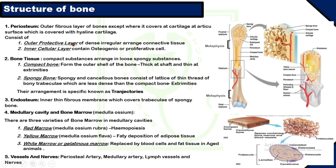The first structure of bone is the periosteum. It is the outer fibrous layer of bone which surrounds all of the bone except at the articular surface, which is covered by hyaline cartilage — so it does not cover the part of the bone facing the joint. Periosteum consists of an outer protective layer and an inner cellular layer. The outer protective layer is composed of irregular connective tissue, and the inner cellular layer contains osteogenic or proliferative cells such as osteoclasts and osteoblasts.